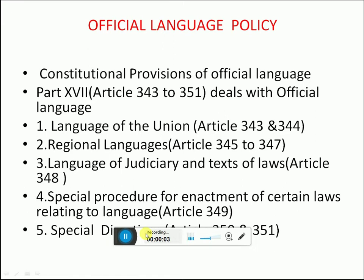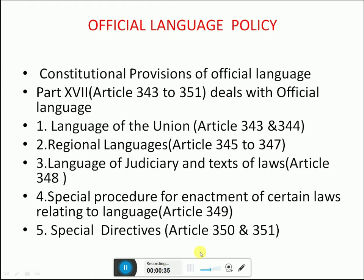Constitutional Provisions of Official Language: In Part 17, Articles 343 to 351 deal with official language. Articles 343 and 344 cover Languages of the Union. Articles 345 to 347 deal with regional languages. Article 348 covers Languages of Judicial and Text of Laws. Article 349 covers Special Procedure for Enactment of Certain Laws Relating to Languages. Special Directives are in Articles 350 and 351.